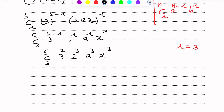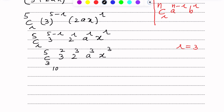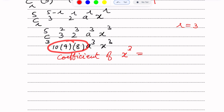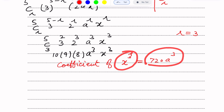So we have ⁵C₃ · 3² · 2³ · a³ · x³. ⁵C₃ = 10, 3² = 9, 2³ = 8. Multiplying: 10 × 9 × 8 = 720. So the coefficient of x³ from the first expansion is 720a³.